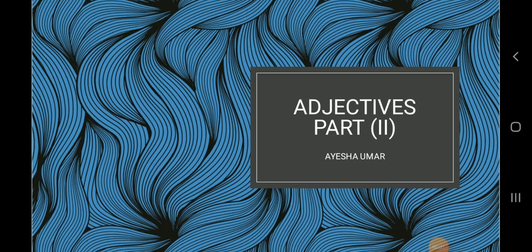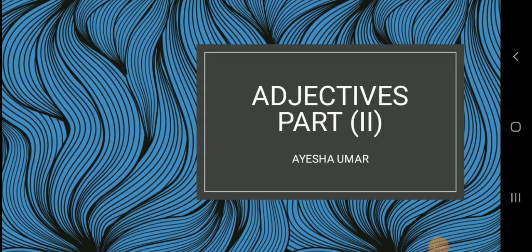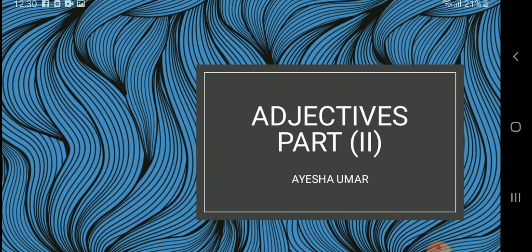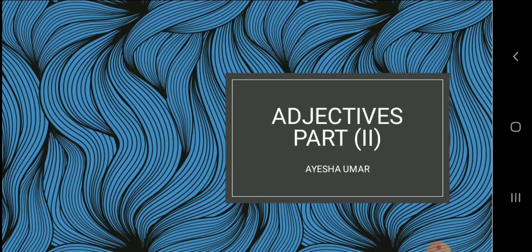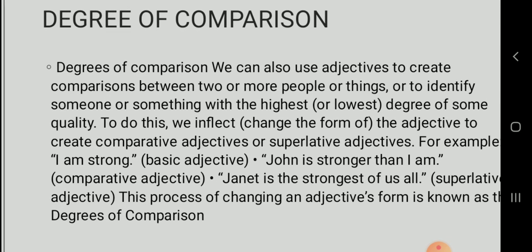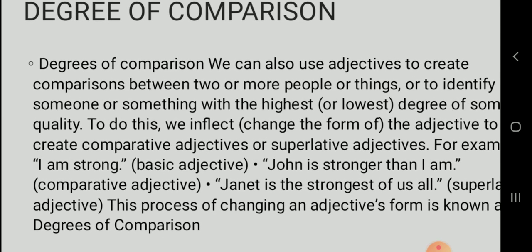This lesson is about adjectives — different aspects and different kinds of adjectives will be discussed here. The difference between determinants and adjectives will also be a subject of discussion. The first slide is about degree of comparison. We can use adjectives to create comparison between two or more people or things, or to identify someone or something with the highest or lowest degree of some quality. To show the degree of comparison, we inflect or change the form of adjectives.